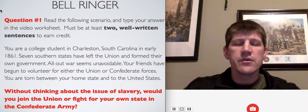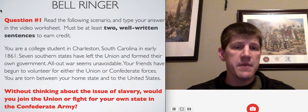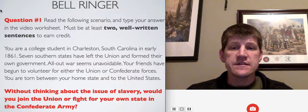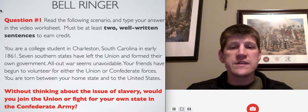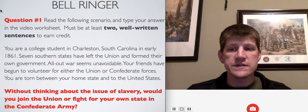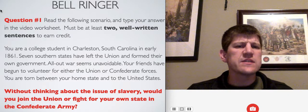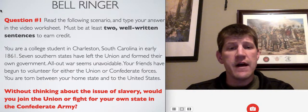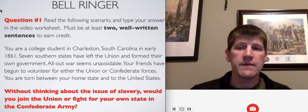Your first question today, your bell ringer scenario is this. You are a college student in Charleston, South Carolina in early 1861. Seven southern states have left the Union and formed their own government, including South Carolina. All-out war seems unavoidable now. Your friends have begun to volunteer for either the Union or the Confederate forces. You are torn between your home state and the United States. Without thinking about slavery, would you join the Union and fight for your nation, or would you join the Confederacy and fight for your own state? That's your first question.